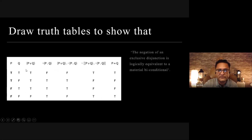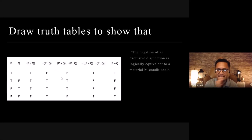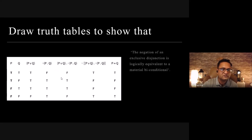To construct the truth table, we have columns for p and q, then p⊕q (exclusive disjunction), then ¬(p⊕q), and finally the material biconditional p↔q. The exclusive disjunction column gives: false, true, true, false. The negation of that gives: true, false, false, true. The material biconditional truth table is also: true, false, false, true. They are exactly equivalent, which is what we needed to show.